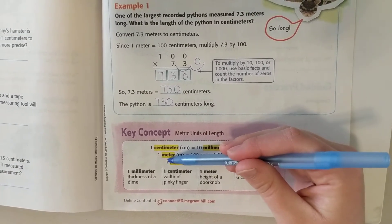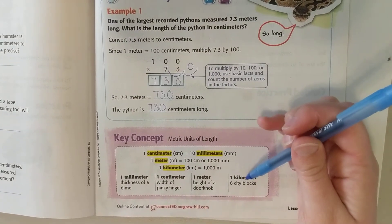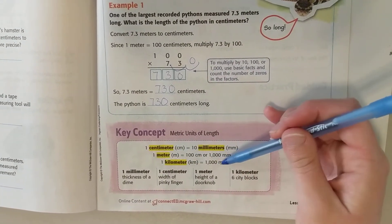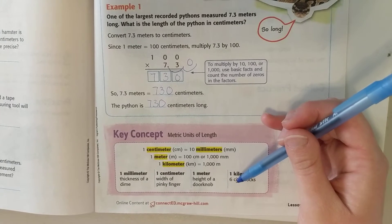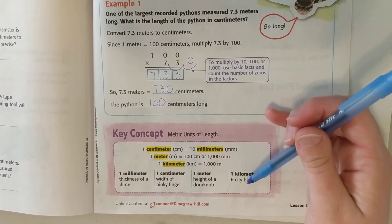Finally, the biggest we'll work with in fifth grade is a kilometer. A kilometer is 1000 meters. That's about six blocks or so, less than a mile, but it's in that same sort of range.